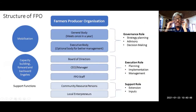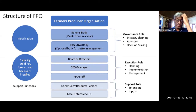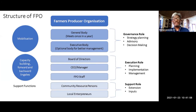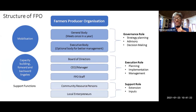A key finding is that we often don't make the institutional structure clear — we assume everybody has the same role and ends up doing all activities. Technically, every FPO should have a general body that meets once a year, where all members participate. There should also be an executive body that can take decisions. While not legally required, having a small executive body to make key strategic decisions is better because convening the entire general body as needed may not always be practical.